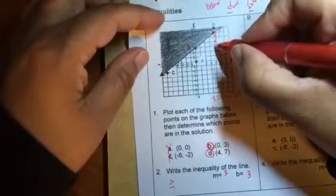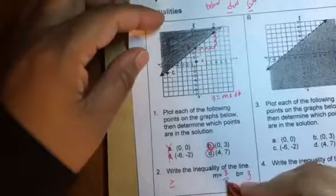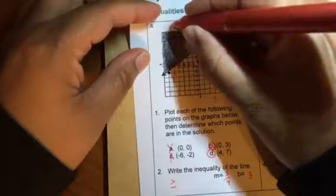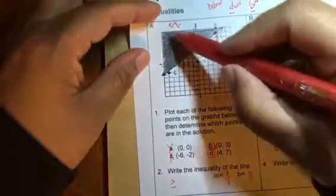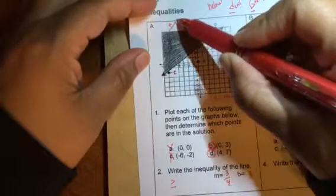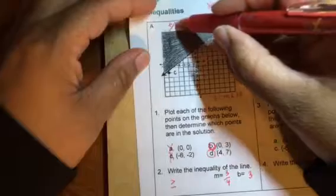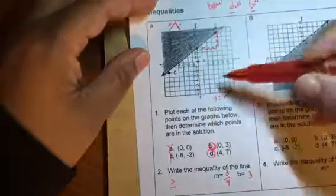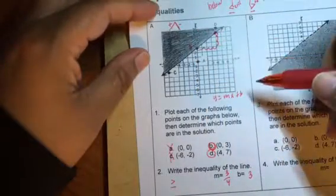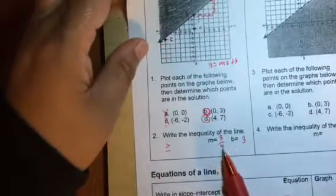And I'm going over one, two, three, four units. Now this is a positive slope. How do I know that? If you guys don't know, your mountaintop, this from left to right is going up. So it's positive from left to right. It's going down, it's negative. So that's a negative slope. So this is a positive slope. So three fourths is okay.